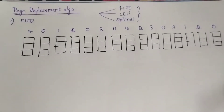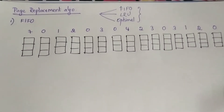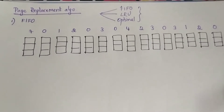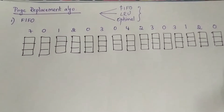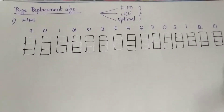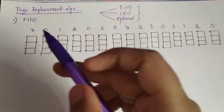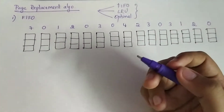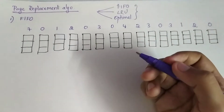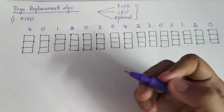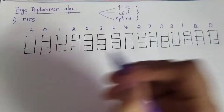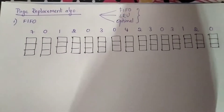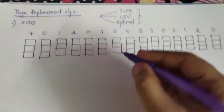Hi friends, welcome to Fun Learning Engineering. Here we would be talking about the first page replacement algorithm — First In First Out. You would be given various pages and asked to find the number of page faults. You can use this method and find the solution very easily.